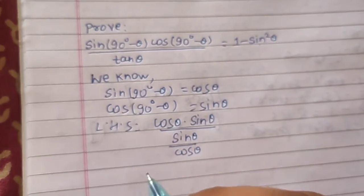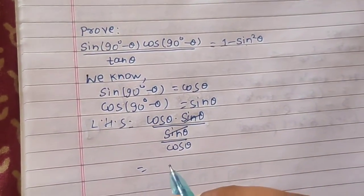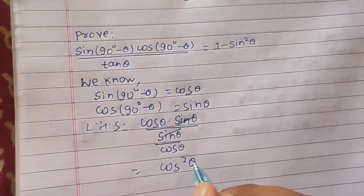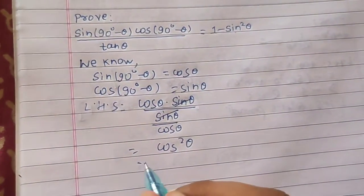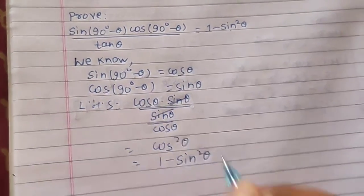In the LHS, sin cancels out and cos moves up, giving us cos²θ. And cos²θ equals 1 - sin²θ.